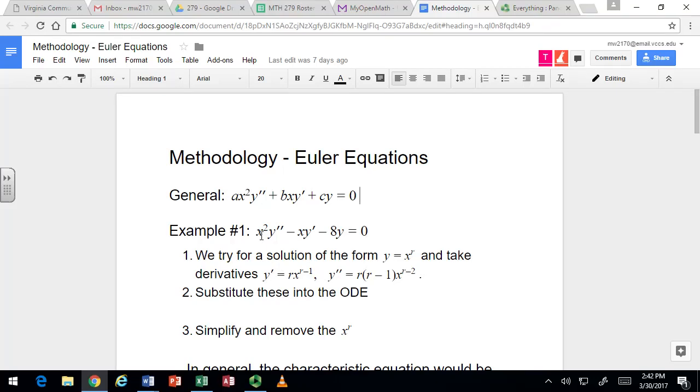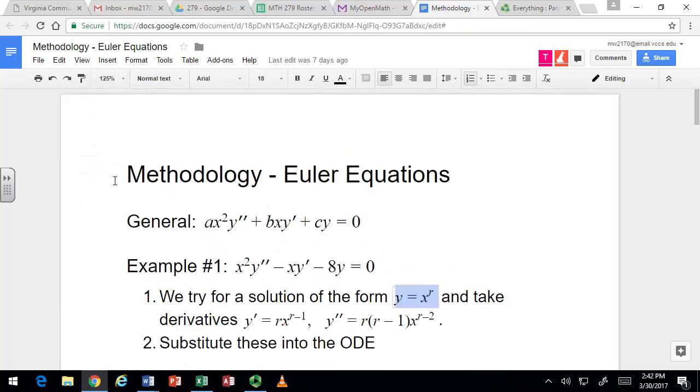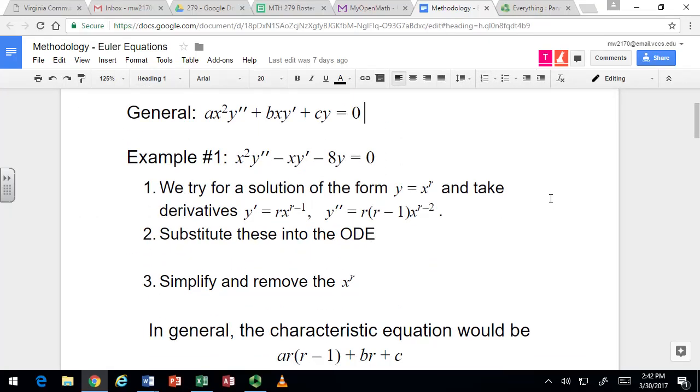In our example, number one, we've got A is 1 and B is negative 1 and C is negative 8. But for any Euler equation, you would suppose that the solution is y equals x to the r, where our goal is to figure out what r is. And r is just some number like 2 or 3, though I guess it could be a fractional value.